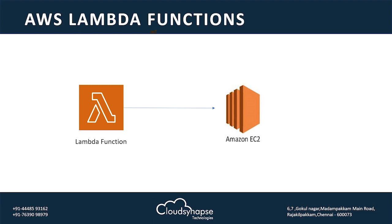If you need to build code, you don't need to procure any server or storage. When the code executes, the output is the duration — the execution time. If you need to run any server in AWS, you just need to run your output. This is AWS Lambda function.